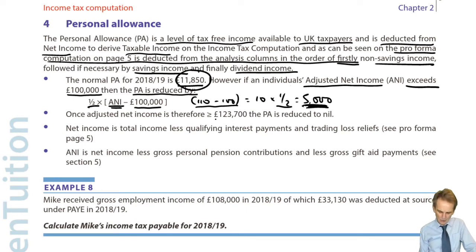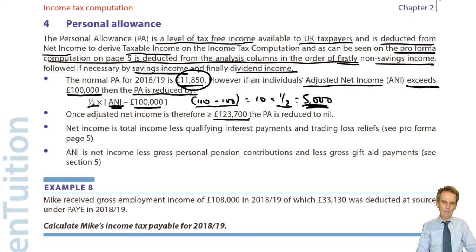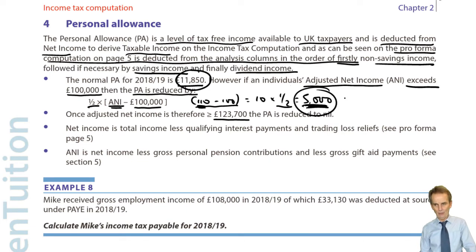Once adjusted net income reaches £123,700, the personal allowance is reduced to nil. Think about it: £11,850 times 2 is £23,700; so £100,000 plus £23,700 is £123,700. At that point, the excess above £100,000 is at least £23,700, and 50% of that equals £11,850 — the full personal allowance is wiped out. For income between £100,000 and £123,700, you'll have a partially reduced personal allowance.